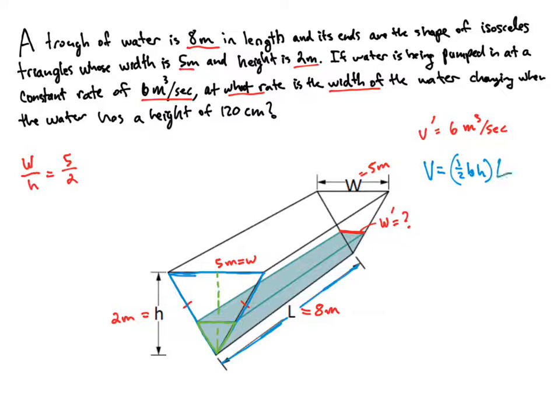So that's times L, or the depth, depending on what our perspective is. So cleaning that up a little, we're going to have V is equal to one half of the base times the height. And our length is 8. So 8 times one half is 4. So our volume is equal to 4 times the base times the height.